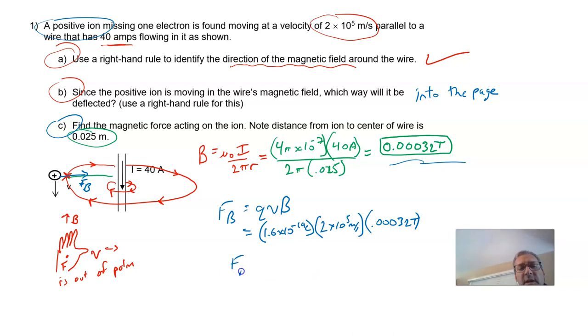So that gives us a net force of magnitude 1.024 times 10 to the minus 17 newtons.